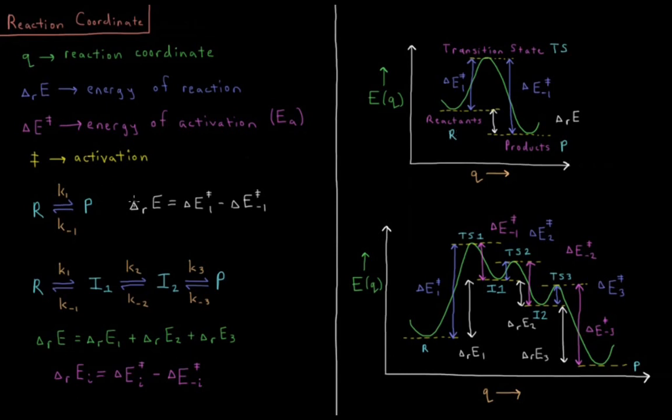Our energy change of reaction here is equal to the energy of activation in the forward direction minus the energy of activation in the negative direction. So we can relate the forward and reverse energies of activation through the energy of reaction. That would be the simple case where we have a single elementary step, a single net chemical reaction that's occurring there.